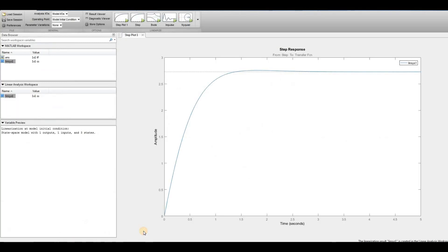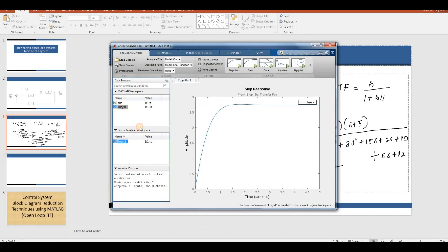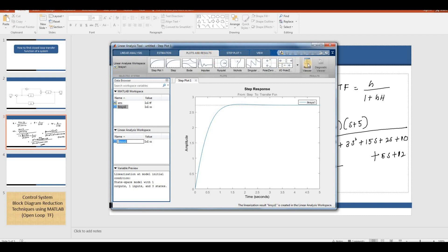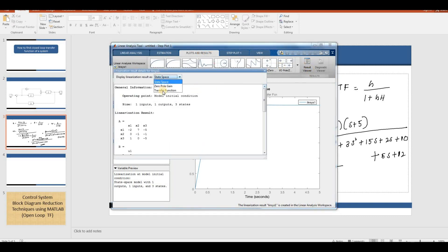In another way, select this linear analysis model, go to Plot and Results. This is one of the simplest ways of reducing the transfer function by using a linearization technique.